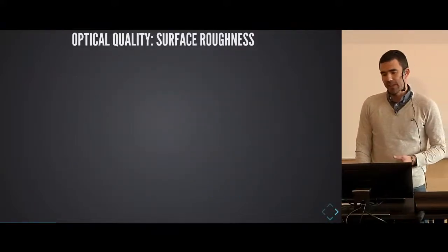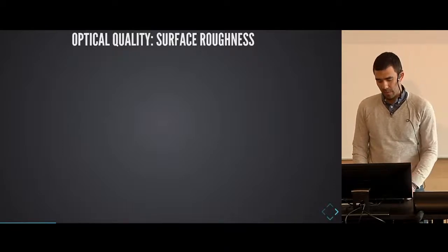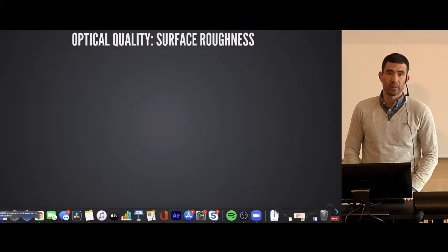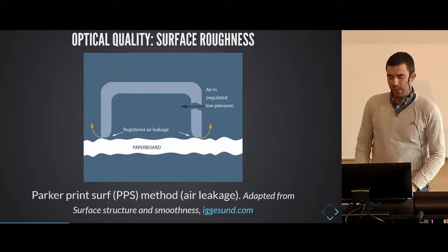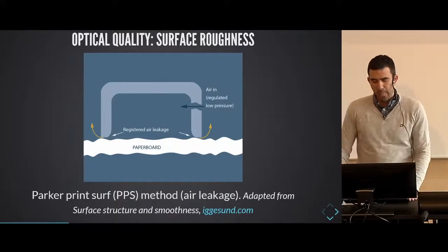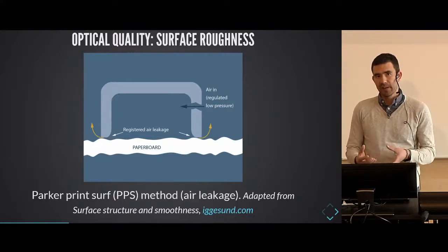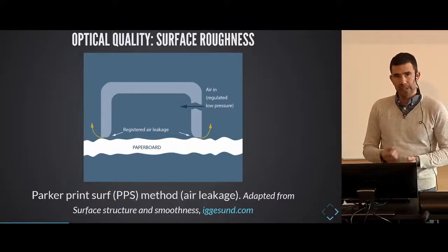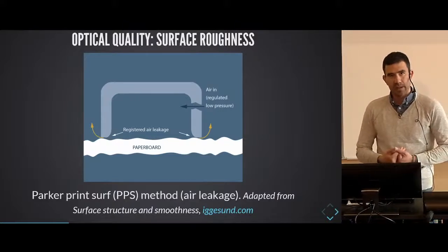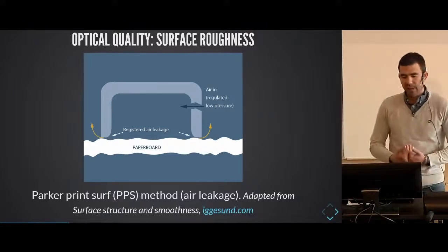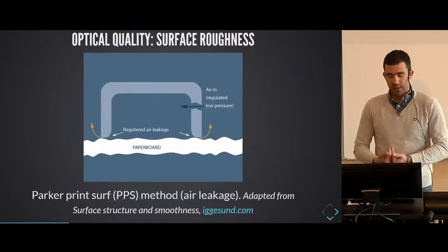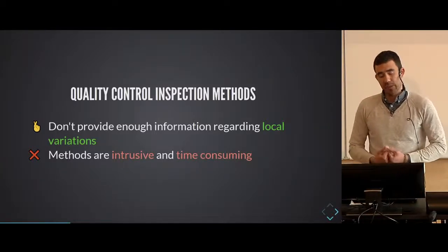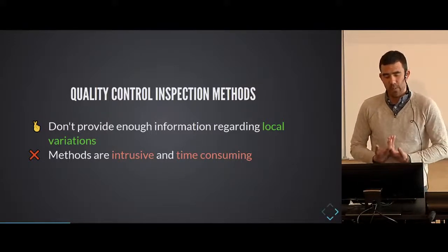Surface roughness is the number one parameter measured in industrial environments to assess the optical quality of high-quality products. Traditionally, paper manufacturers use air leakage methods — a device that relies on injecting air through a test device clamped to the surface of the material. It registers the air that leaks through the interface between the material and the device, and this air leakage is correlated to the surface roughness of the material. These quality control methods for inspection work well and basically do their task, but why do we need to improve them?